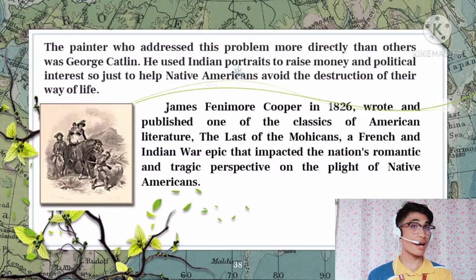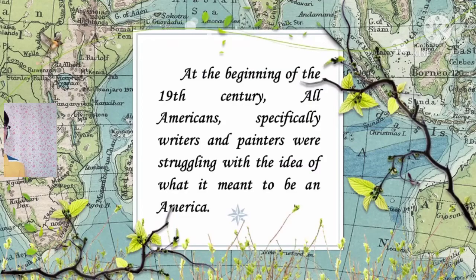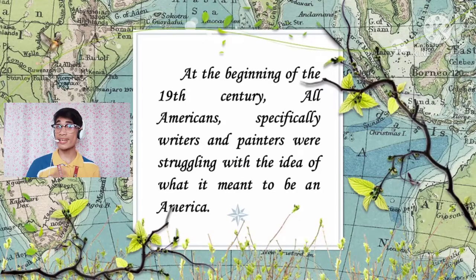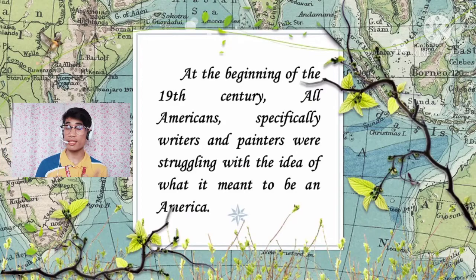The painter who addressed this problem more directly than others was George Catlin, who used Indian portraits to raise money and political interest to help Native Americans avoid the destruction of their way of life. American cultural innovation was thoughtful in the early republic and early national periods; its major contributions generally focused on subjects that distinguished the United States from Europe, such as the work of the great naturalist painter and engraver John James Audubon. At the beginning of the 19th century, all Americans — specifically writers and painters — were struggling with the idea of what it meant to be American.